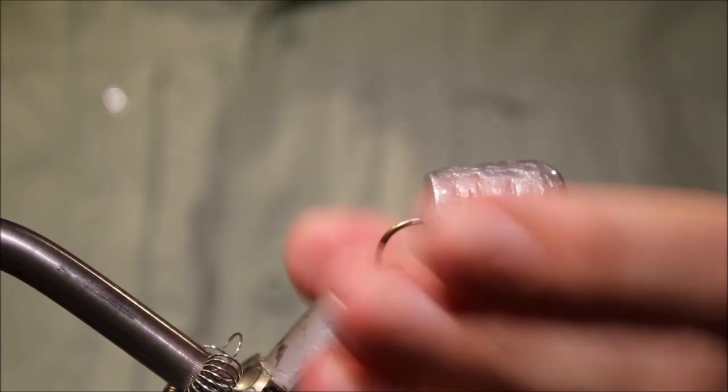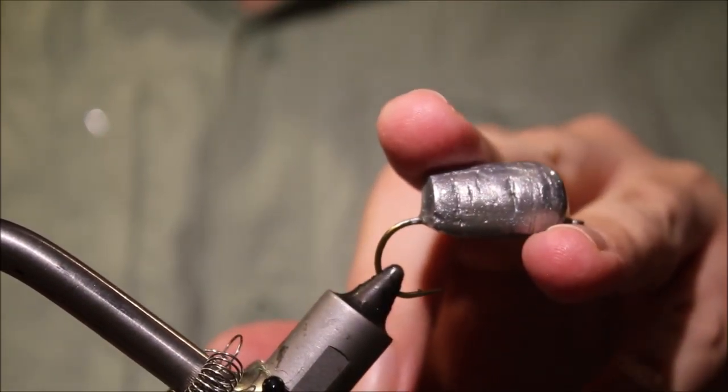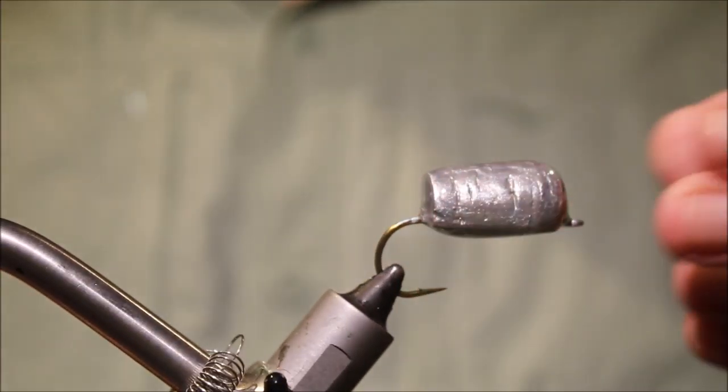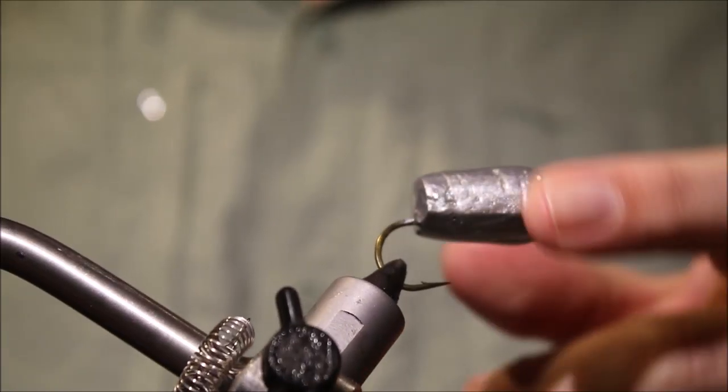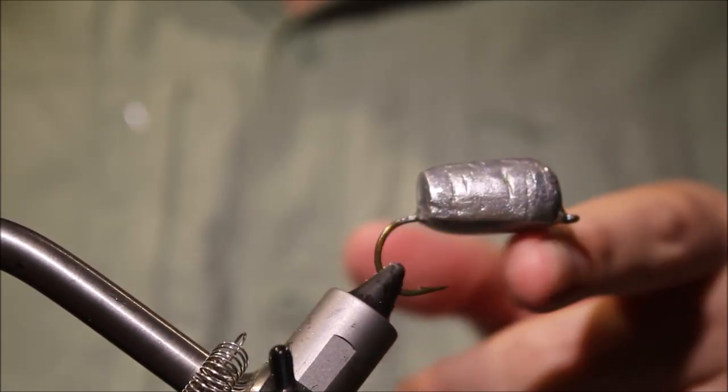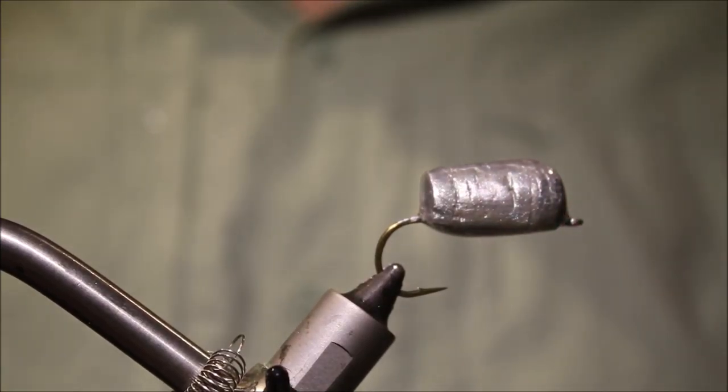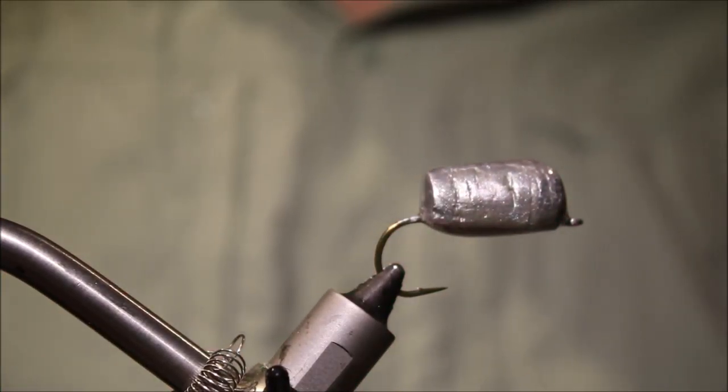So, once that's set up, you paint it, you paint up your cork body. I've just used silver nail polish for this, and then I've coated it with epoxy, and then allowed it to dry on the wheel. You don't need a super heavy layer of epoxy either, it can be quite light.